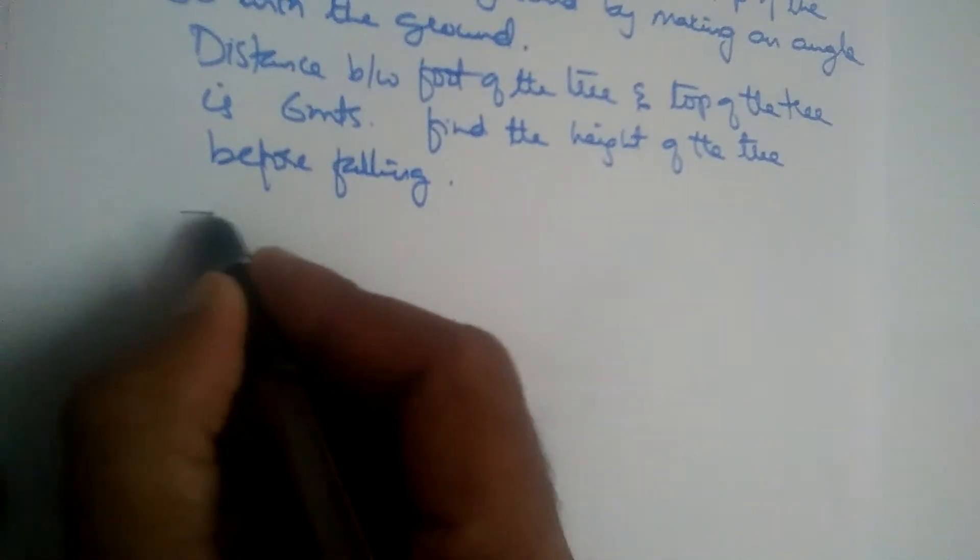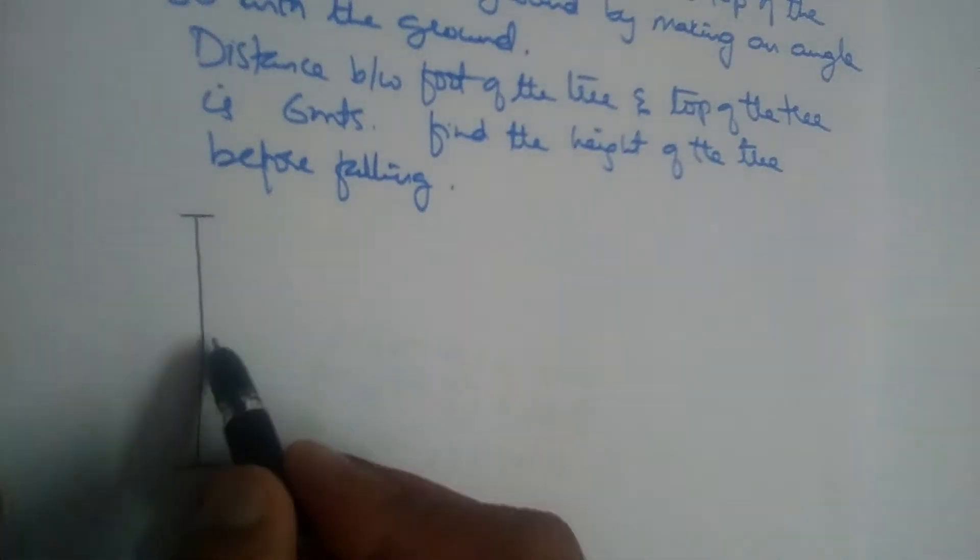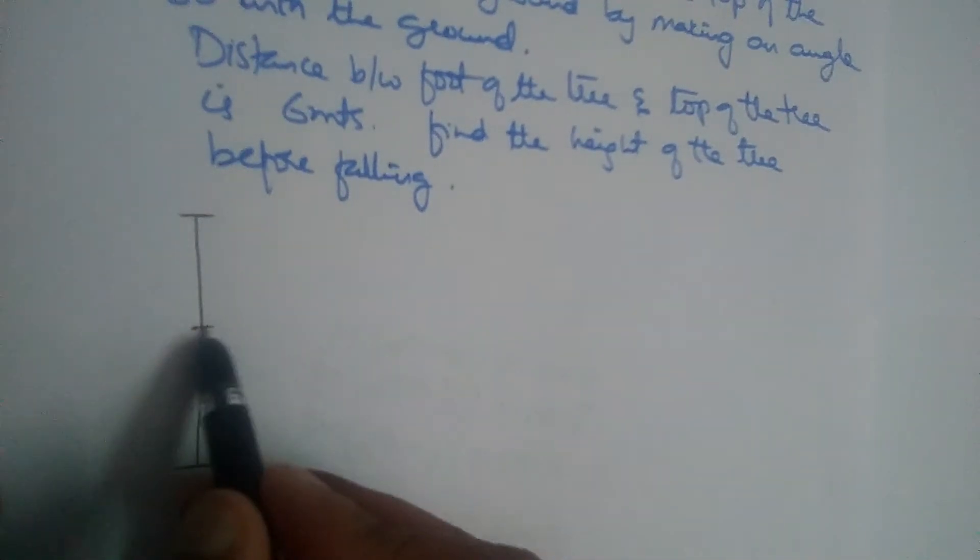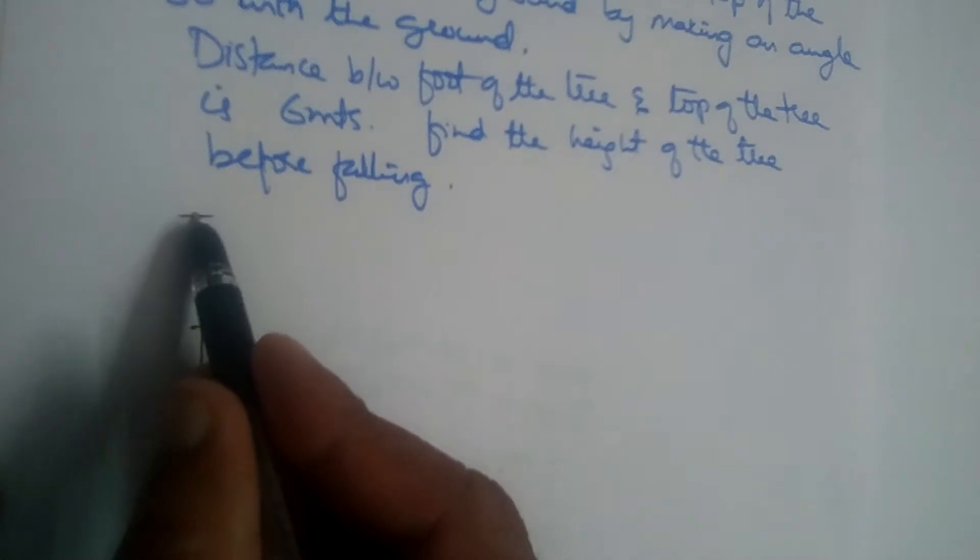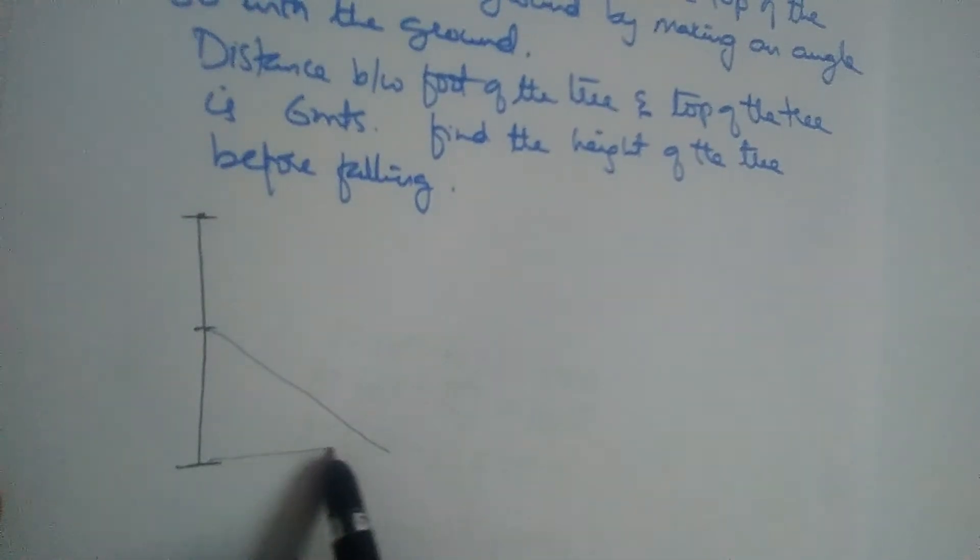So see here. So let us say this was the original height of the tree. Due to the storm it got broken and the top, this part now is touching the ground. This is the ground.